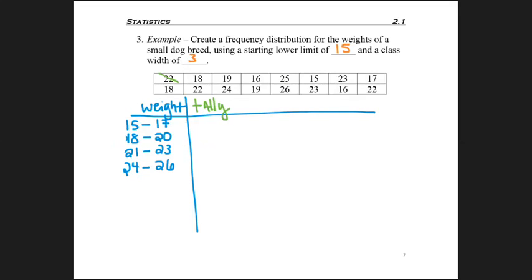So, when I see the first number of 22, I'm going to put it in the third class. The next number of 18 would go in the second class. 19 goes in the second class. 16 in the first class. 25 the last class. 15 the first class. And then I keep going this way.